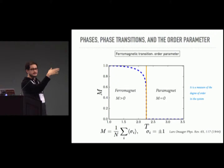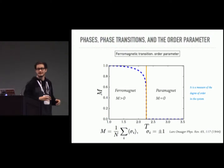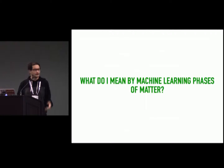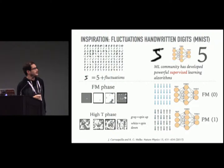The phase transition is characterized by an order parameter called magnetization — the expectation value of the average over the spins in the lattice. At low temperature the magnetization is finite, and it goes to zero at the critical point predicted by Lars Onsager in the 1940s. It's a pretty well-understood problem, but a good starting point for understanding machine learning techniques.